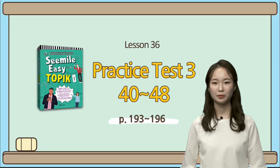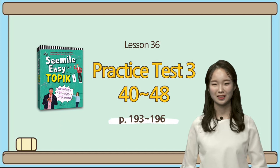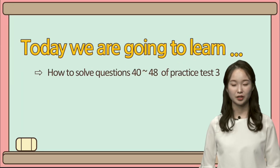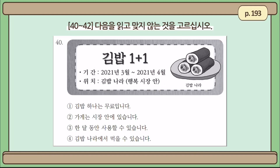Hi, guys. I'm Emma from CMAO, and this is the 36th lesson of our Easy Topic 1 class. Today's class starts on page 193 of the CMAO Easy Topic 1 book. The question for numbers 40 to 42 is 다음을 읽고 맞지 않는 것을 고르십시오 — choose the sentence that does not match the content of the passage. So it's asking you to accurately identify the content details. Let's get started.